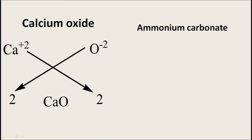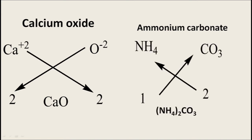The next compound is ammonium carbonate. Ammonium is represented by NH₄ with charge +1, and carbonate CO₃ has charge -2. Exchanging charges: since ammonium is a compound radical, we write the bracket — (NH₄)₂. Carbonate takes 1 and remains CO₃. The molecular formula of ammonium carbonate becomes (NH₄)₂CO₃.